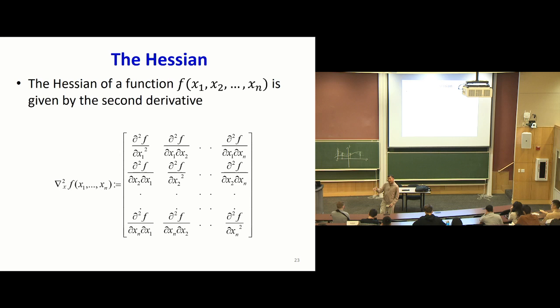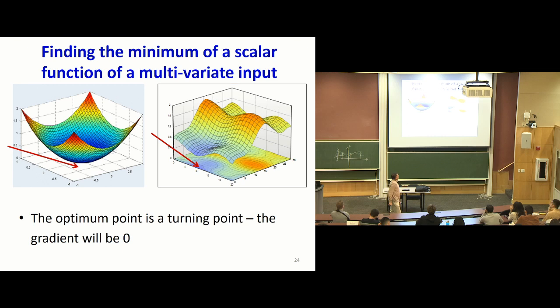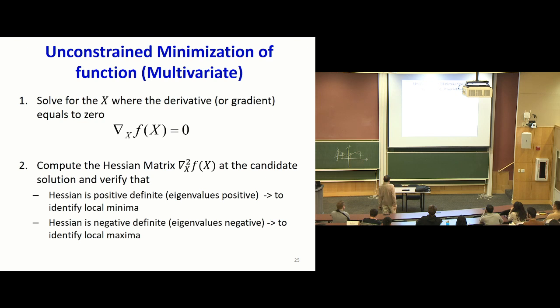If the eigenvalue is positive, the second derivative in that direction is positive — so a zero derivative there is probably a minimum. If the eigenvalue is negative, that's likely the location of a maximum. When trying to find the minimum of a scalar function of a multivariate input, you find a location where the derivative is zero — a turning point — and then look at the Hessian. Solving for the derivative to be zero is not sufficient because that could be a maximum, minimum, or even an inflection point.